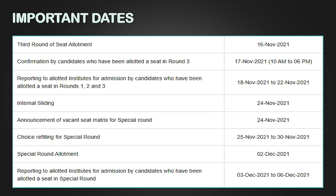Round 3 seat allotment happens on November 16th. Students allotted seats in Round 3 must confirm between 10 AM and 6 PM on November 17th. After all three rounds are complete, students selected in any round need to report to the allotted institutes during the window of November 18th to November 22nd. Students should book their travel tickets — flights or otherwise — accordingly to meet this reporting deadline.